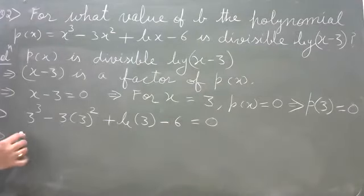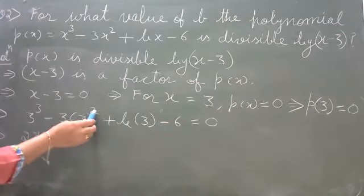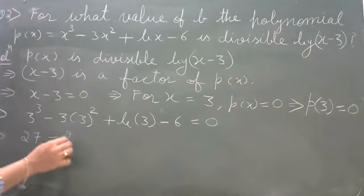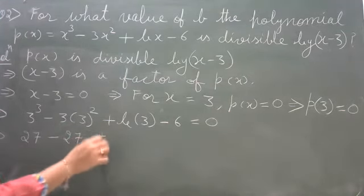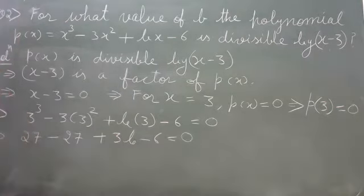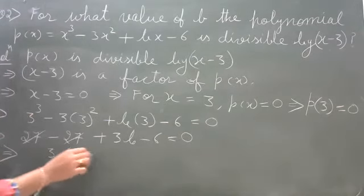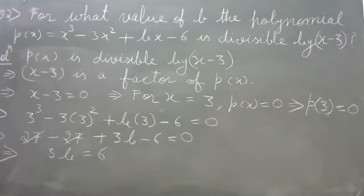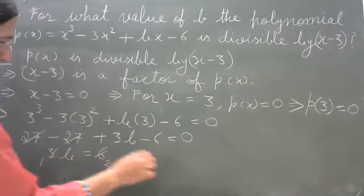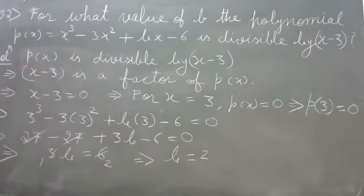Solving: 27 minus 3 into 9 plus 3b minus 6 equals 0, which gives 27 minus 27 plus 3b minus 6 equals 0, so 3b equals 6. Dividing by 3, b equals 2 is the answer.